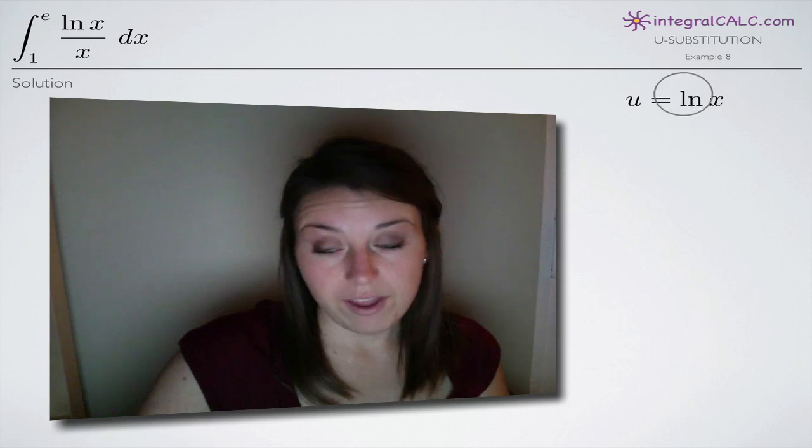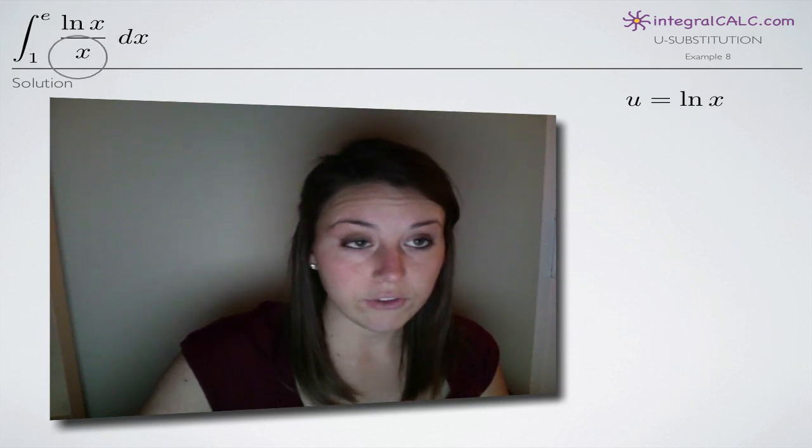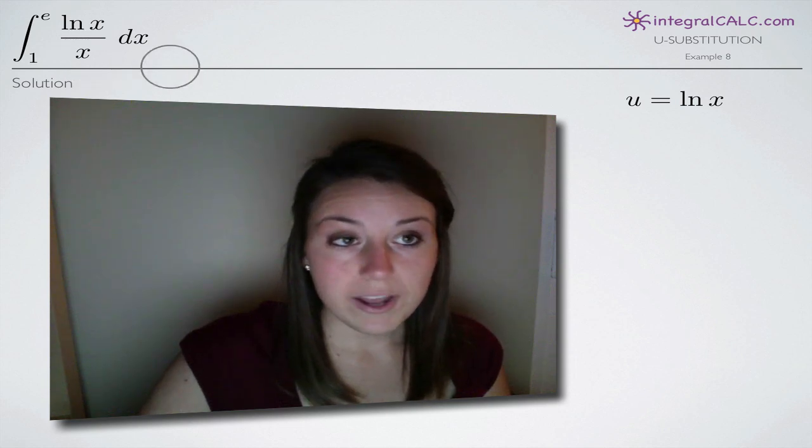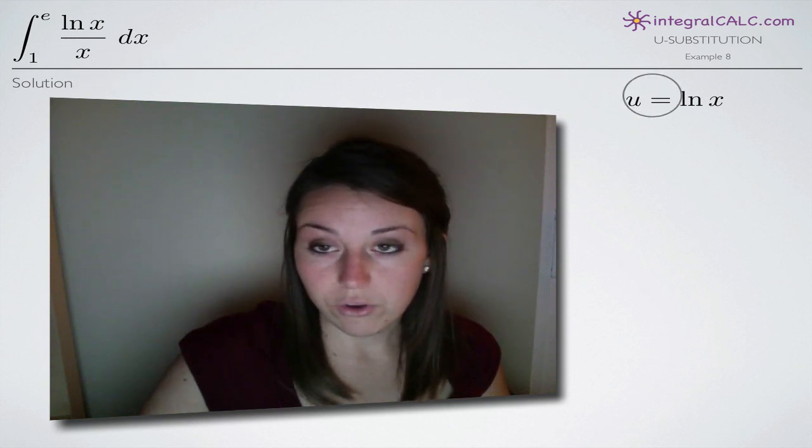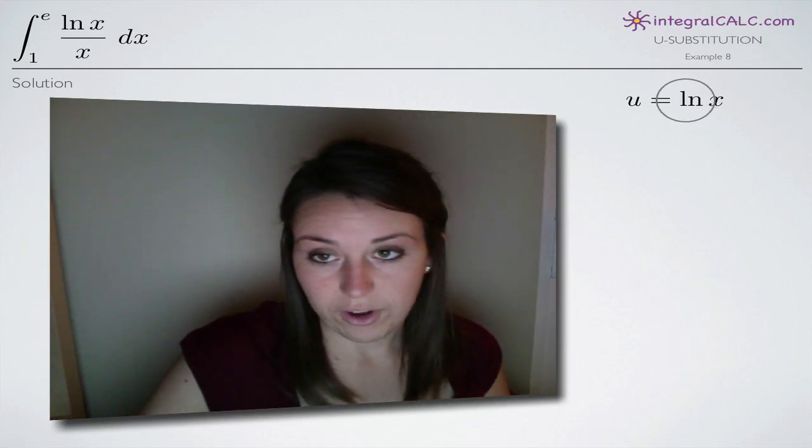1 over x, the derivative of ln of x, is also a good candidate because it will likely cancel the x here in our denominator. So let's go ahead and try it. You can always pick something for u and if it doesn't work out, go ahead and pick another value. In this case, we'll assign it to natural log of x.